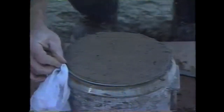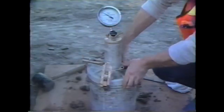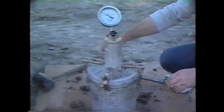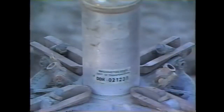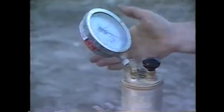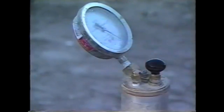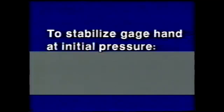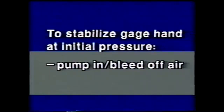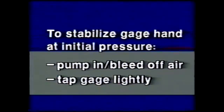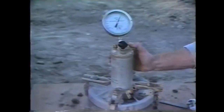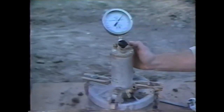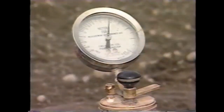Then the flange is wiped clean, and the cover is clamped on with both petcocks open. Water is injected through one petcock until it comes out the other. With both petcocks open and the air bleeder valve closed, air is pumped into the air chamber until the gauge hand is on the initial pressure line. To stabilize the gauge hand at initial pressure, air is pumped in or bled off as necessary, and the gauge is tapped lightly. Next, both petcocks are closed, and the thumb lever is pressed down, releasing the air into the bowl. The sides of the bowl are tapped sharply with the mallet, and the gauge is tapped gently until the dial hand stabilizes.